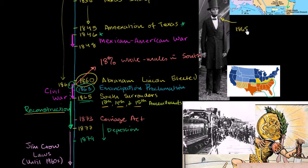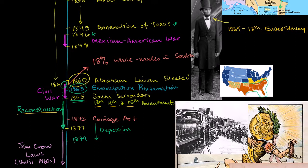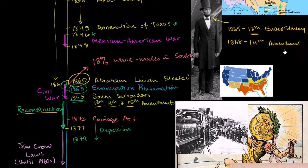In 1865, you have the 13th Amendment, and this abolished slavery — it ended slavery. We talked about the Emancipation Proclamation, and that was essentially Abraham Lincoln's executive order, but now it became official law in 1865. Then in 1868, you have the 14th Amendment, which made every person born in the United States a citizen. And this includes the freed slaves, so the slaves are now free and they are also citizens.